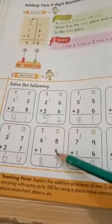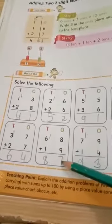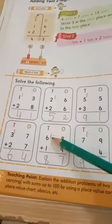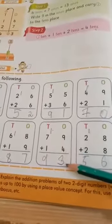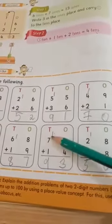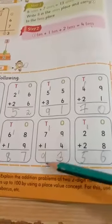8 plus 9, 17. 7, 1 carry kia. 6 plus 1, 7. 7 plus 1, 8. 9 plus 4, 13. 13 mein 1, 1 upar carry kia. 7 plus 1, 8. 8 plus 1, 9.